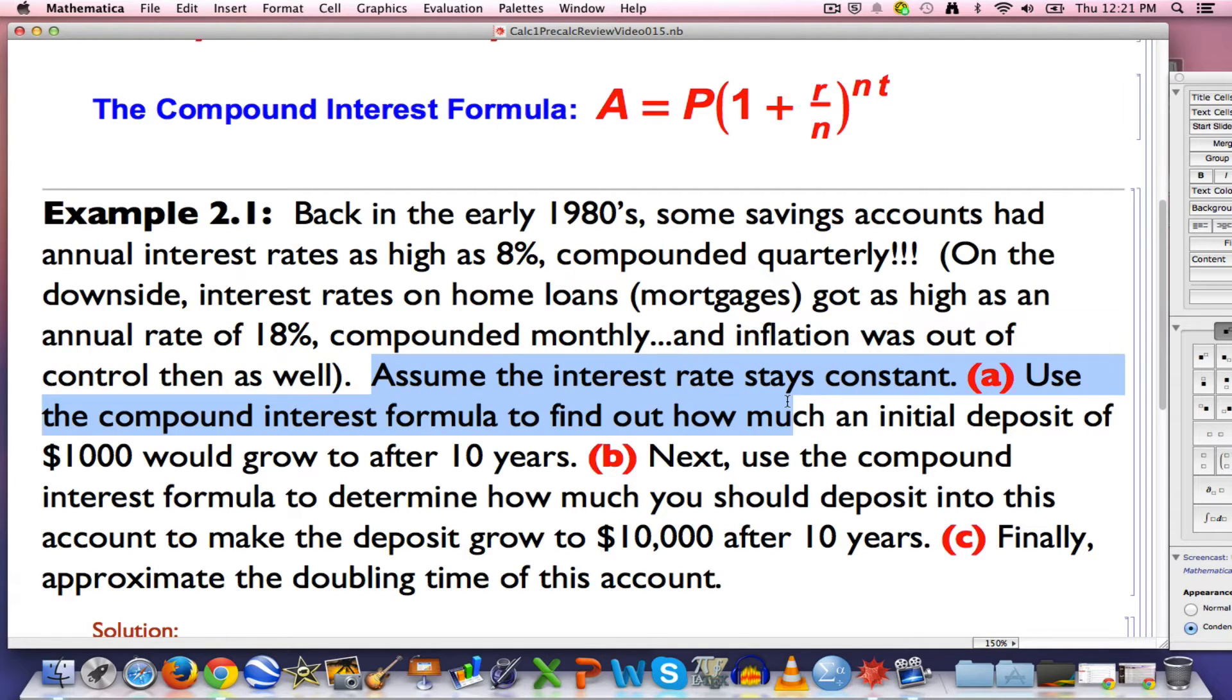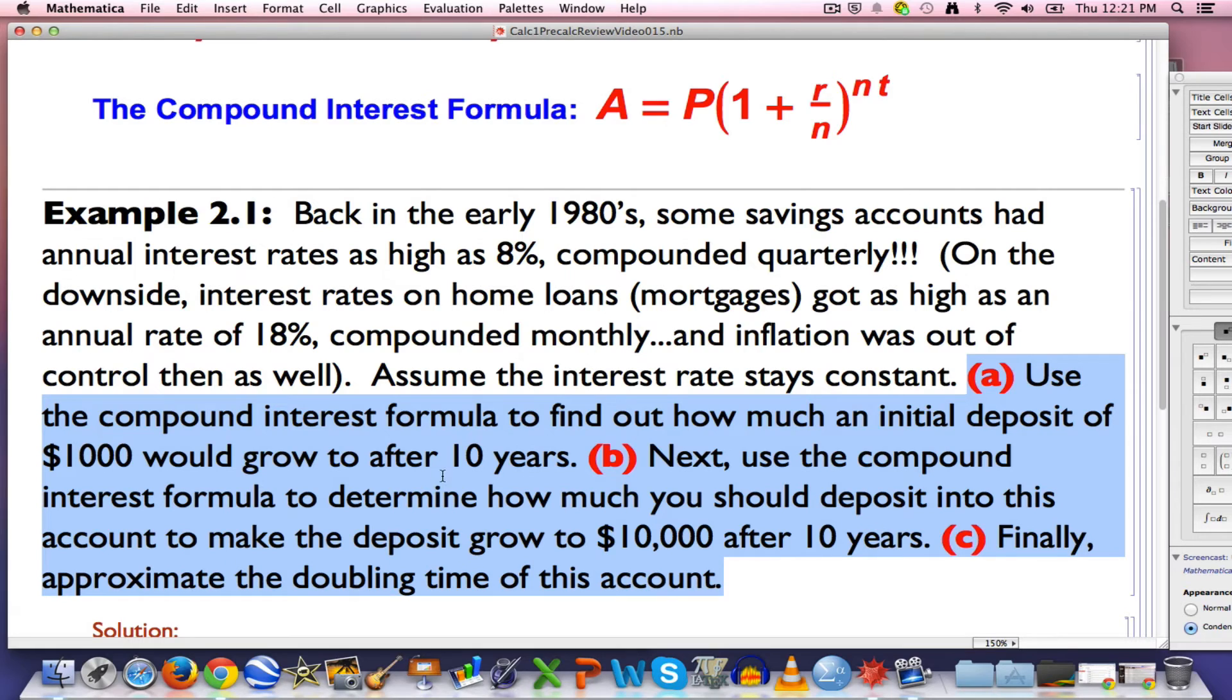Here in this problem, we are going to assume the interest rate stays constant, even though that doesn't typically happen with savings accounts. Three things to do. First, use the compound interest formula to find out how much an initial deposit of $1,000 will grow to after 10 years. Next, use it to figure out how much you should deposit right now to make the account grow to a future value of $10,000 after 10 years. And finally, approximate the doubling time of this account.